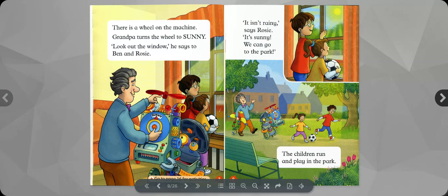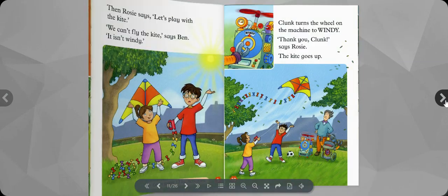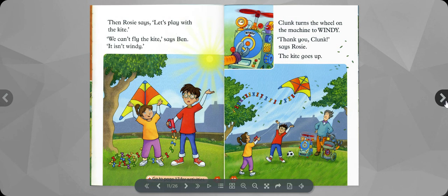The children run and play in the park. Then Rosie says, let's play with the kite. We can't fly the kite, says Ben. It isn't windy.